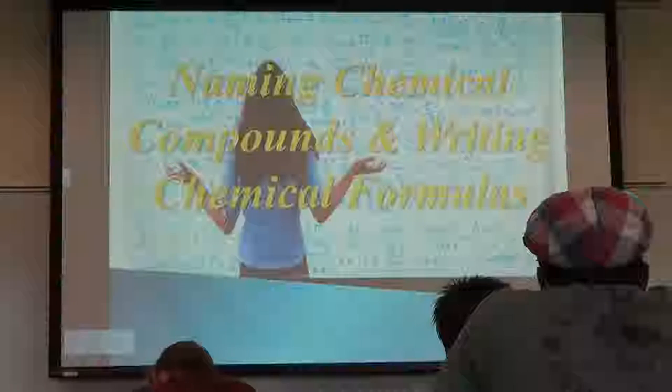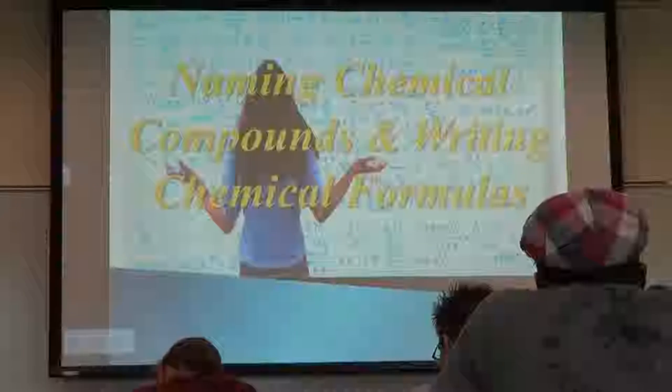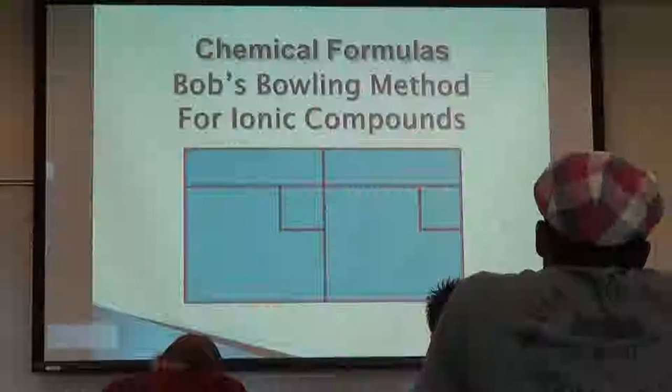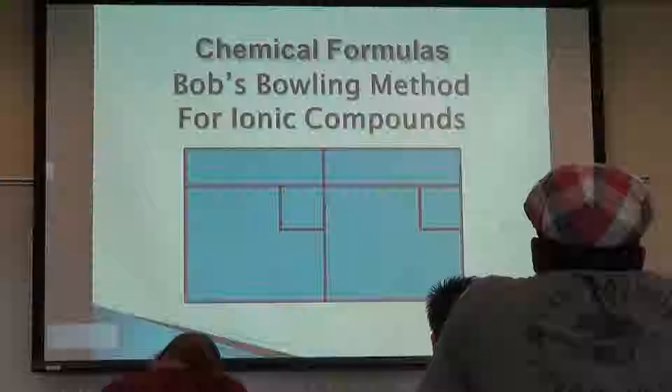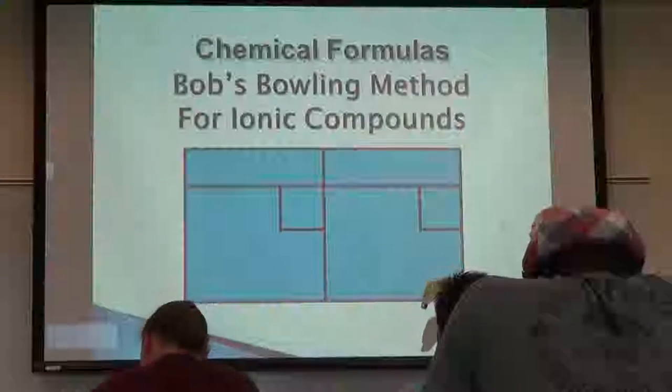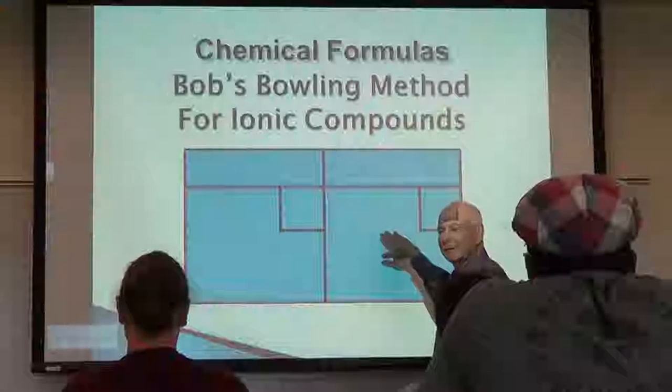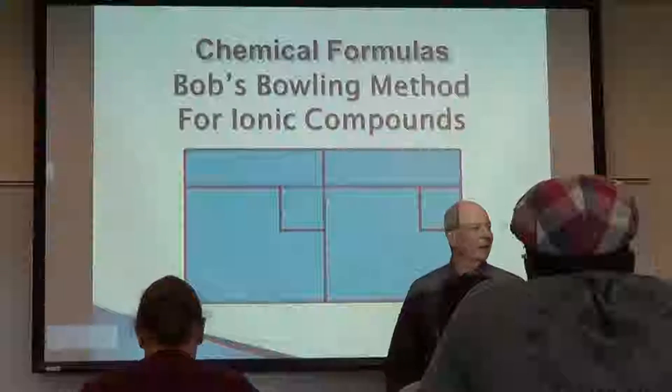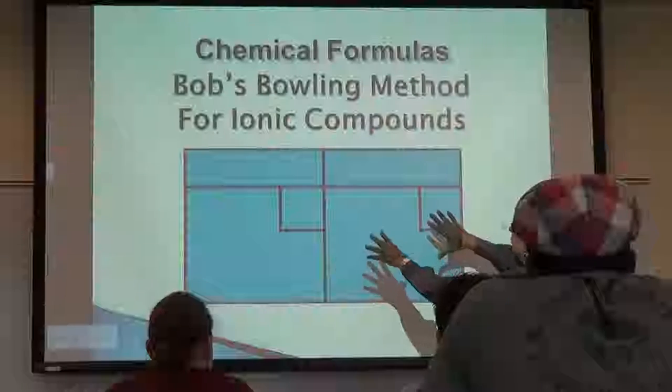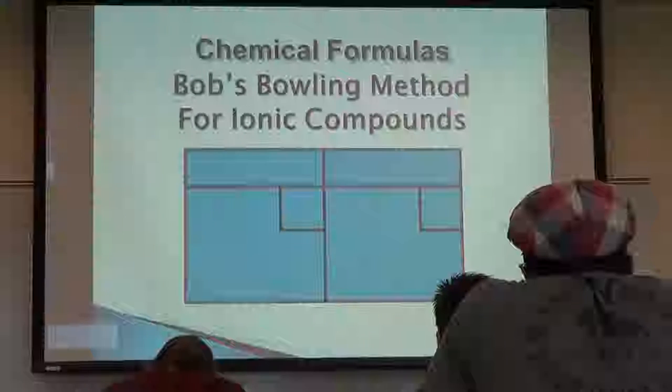So I kind of like this lecture today, mostly because I made it up and it's not in the book, but because it's really kind of chemistry as opposed to the foundation. So this is how to write a chemical formula. I call it Bob's bowling method for ionic compounds. We'll talk a little bit about molecular compounds as well. If you've ever gone bowling and kept score, this looks a lot like the little bowling scorecard. If you don't know anything about bowling or keeping score in bowling, then just think of it as Bob's boxes.